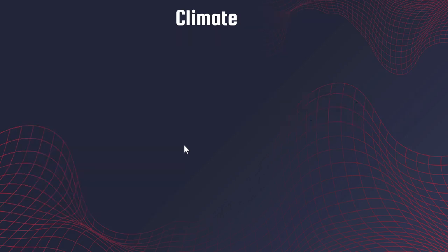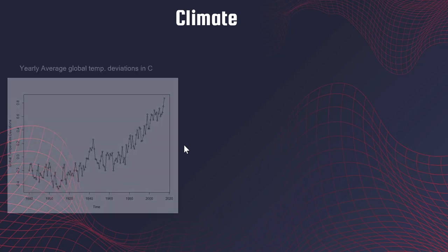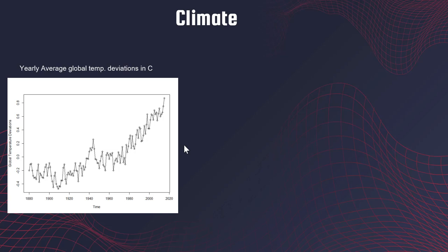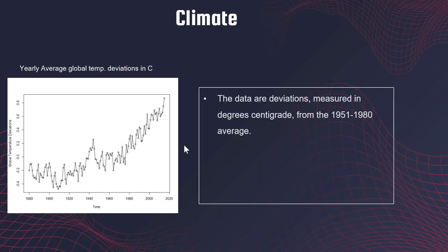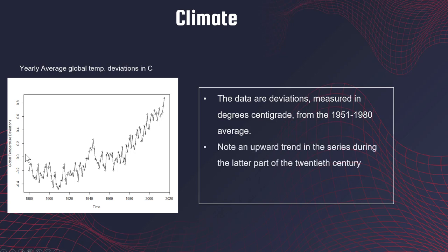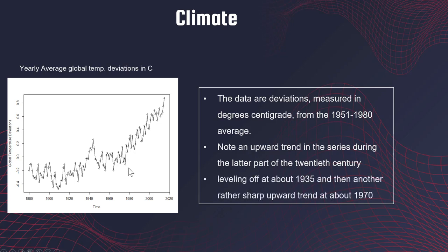Time series also has applications to climate studies. What I have here is global average temperatures, where the x-axis is time and the y-axis is the deviation in centigrade from average temperatures from 1951 to 1980. Notice there is an upward trend in the latter part of the series, some leveling off around 1935, and then a sharp spike after 1970. When people talk about global warming, this is what they are typically referring to.